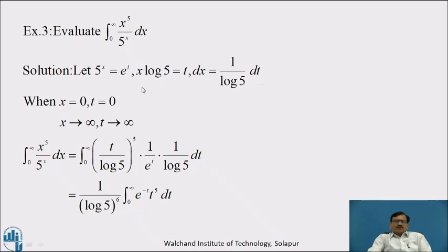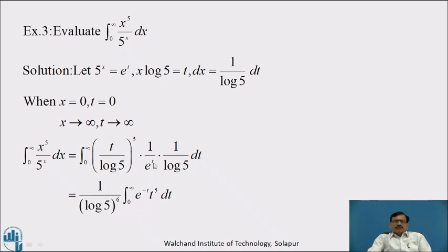Again we change the limits: when x equal to 0, t equal to 0, and when x tends to infinity, t tends to infinity. Substituting in the given integral, integration from 0 to infinity of x raised to 5 divided by 5 raised to x dx equals integration from 0 to infinity of t by log 5 raised to the power 5 divided by e raised to t, into 1 by log 5 dt.